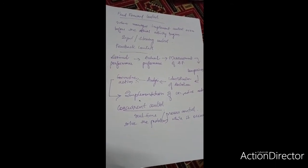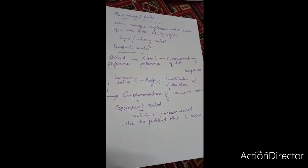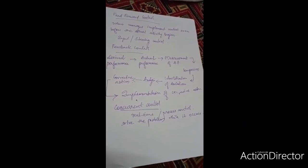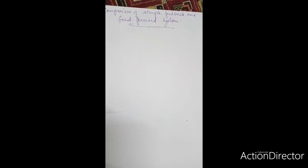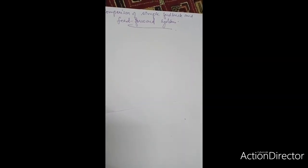I hope I am clear about the feed forward control, feedback control, and concurrent control system. These three control systems occur in three different times. Now we are going to see the comparison of feed forward and feedback control system with the help of a diagram.